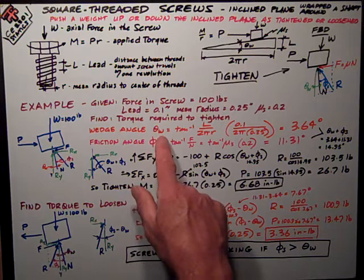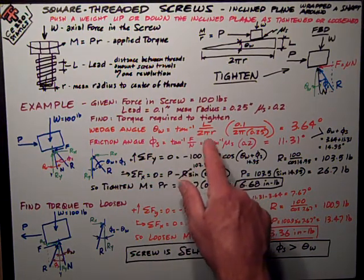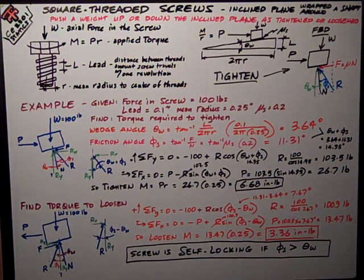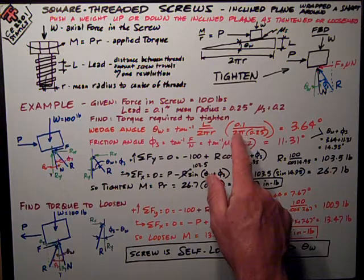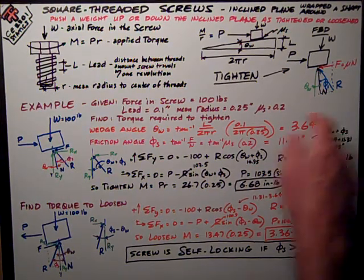We need to figure out what those angles are. The wedge angle θ_W is the tangent inverse of L over 2πR, just the geometry of that unwrapped thread. That angle works out to be 3.64 degrees for this geometry.